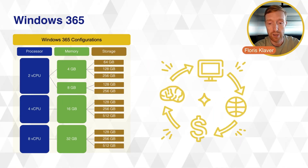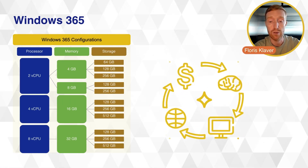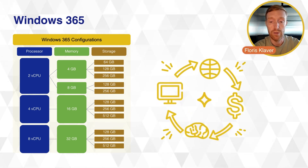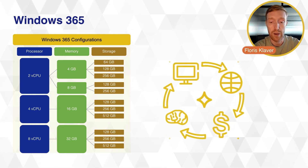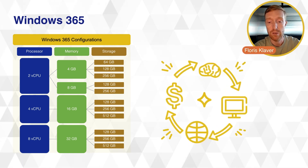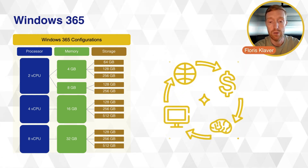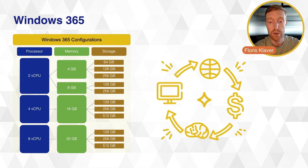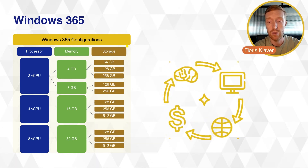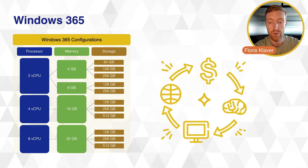On the configuration side, you would need to make certain design decisions. First, you choose the amount of processors you require; based on that, the memory is set — unless you choose two virtual CPUs, in which case you have two options — and then you choose the amount of storage required per configuration.